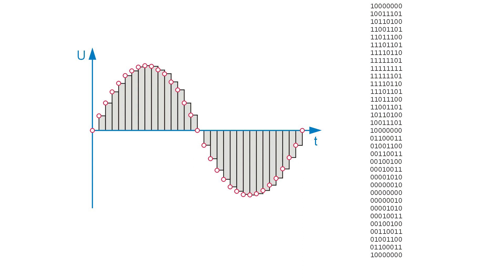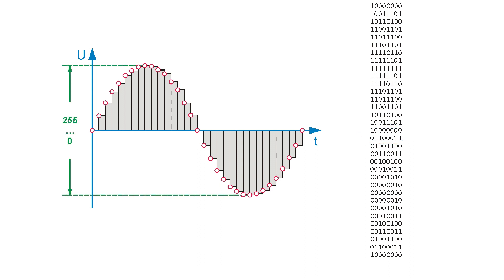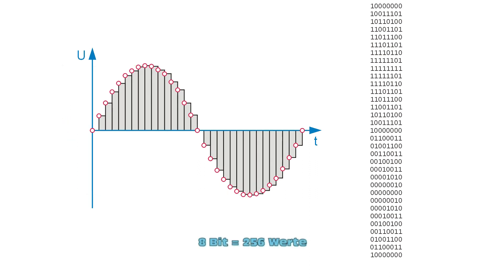However, there is still a second dimension. In our example, we have turned the voltage values into 8-bit binary numbers. With 8 bits, only numbers from 0 to 255 can be represented — that is, only 256 different levels. In order to get finer resolution in this direction, we have to use larger numbers. With 16 bits, we already have 65,536 levels.